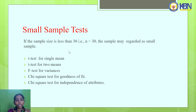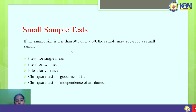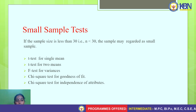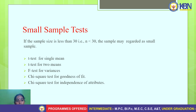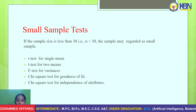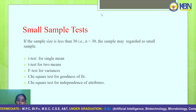Coming to the small sample tests: we consider a sample to be small when the sample size is less than 30. We have the following small sample tests: t-test for single mean, t-test for two means, F-test for variances, chi-square test for goodness of fit, and chi-square test for independence of attributes.